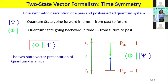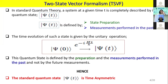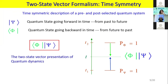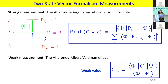In two-state vector formalism, we consider two states: the initial state and the final state, called pre-selected and post-selected states. Pre-selected states evolve from past to future and post-selected states evolve from future to past. We make a measurement in between these two states. Psi is the pre-selected state moving from past to future, and phi is the post-selected state moving from future to present. We make a measurement in between the pre-selected and post-selected states; P(phi) is the probability of post-selected and psi the probability of pre-selected.